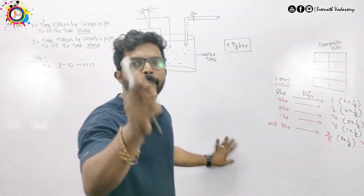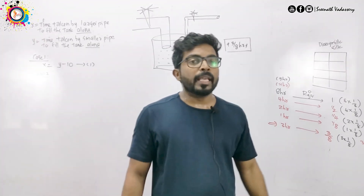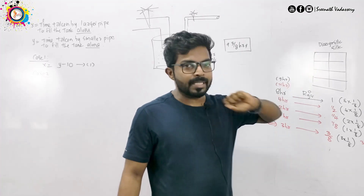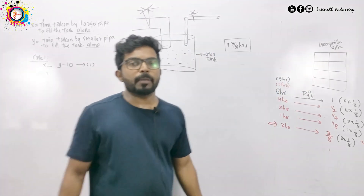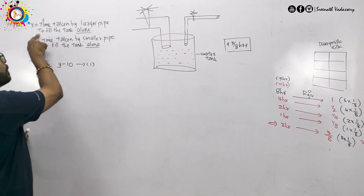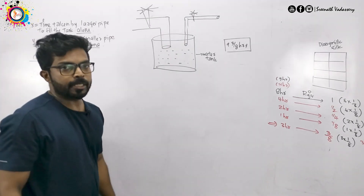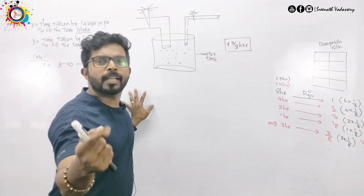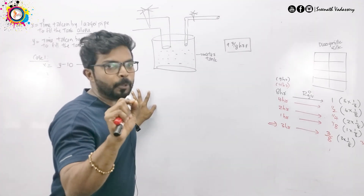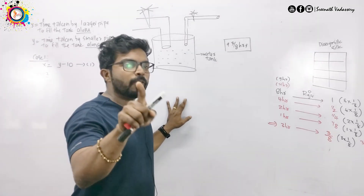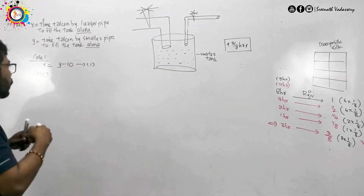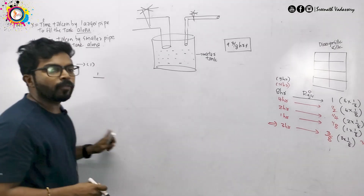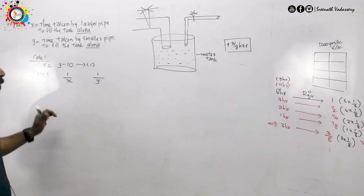This tank will be filled with two pipes — small diameter and large diameter. These two pipes will fill the tank. The tank will be filled full. That's why we will fill the tank. The tank will be filled with large diameter x and 1 by y.